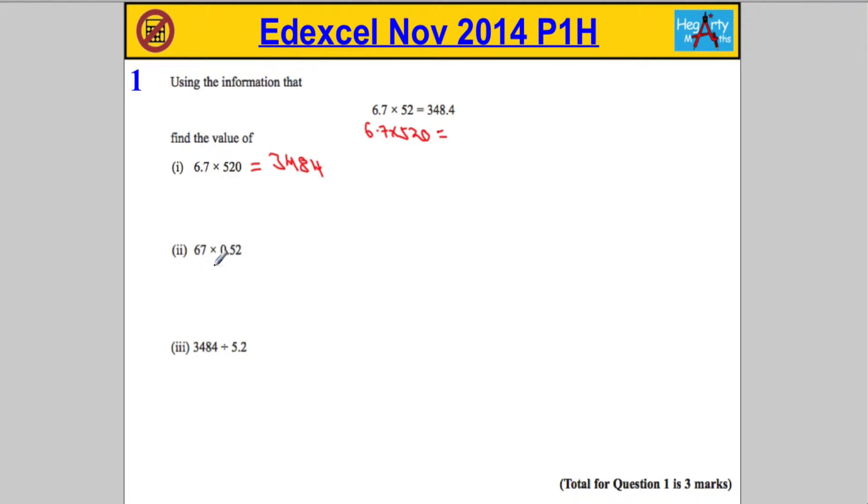Part two, we're asked to work out the value of 67 times 0.52. Now in order to do that, I'm just going to write down the calculation they gave us again: 6.7 times 52 equals 348.4. And I'm going to start to adjust the problem so that I get towards first of all 67, and then I'm going to adjust it again so that we get the 0.52.